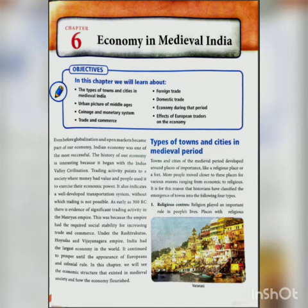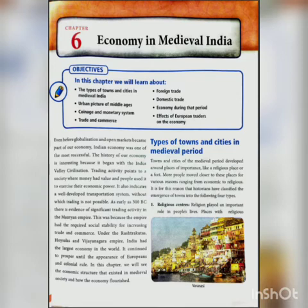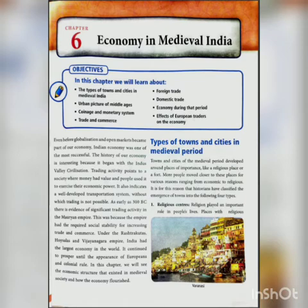As early as 300 BC, there is evidence of significant trading activities in the Mauryan Empire. This was because the empire had the required social stability for increasing trade and commerce. Particularly the Rashtrakutas, Hoysalas, and Vijayanagara Empire maintained good social stability, and India had the largest economy in the world. It continued to prosper until the appearance of European colonial rule.